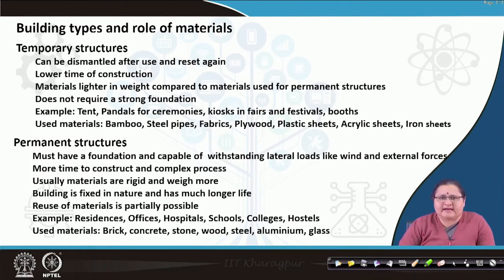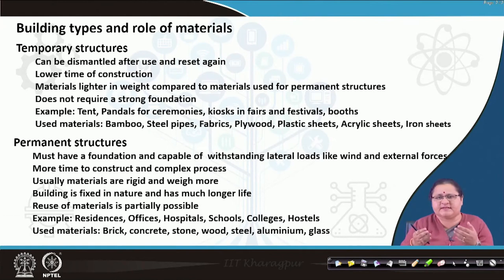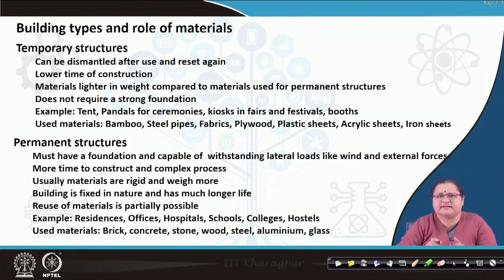We as architects need to know these materials also, and also more towards permanent structures. For temporary structures, materials could be bamboo, steel pipes, fabrics like tarpaulin to cover it, plywood to define spaces, plastic sheets to cover the roof, acrylic sheets — it may be temporary shops, cycle sheds, bus stands where iron sheets are also used. So these are also applied in permanent structures, however we confine the temporary structures to using such kind of materials.